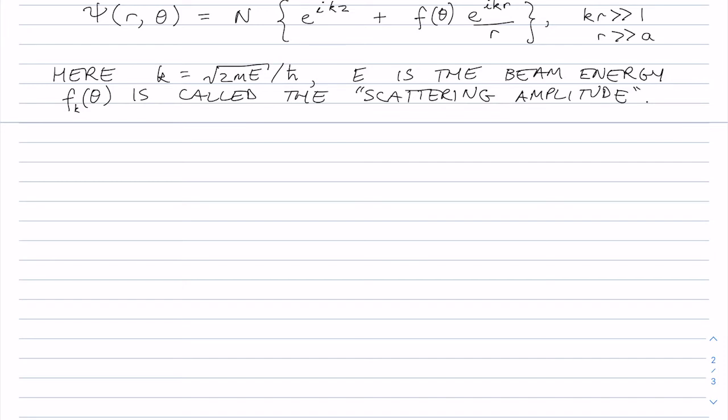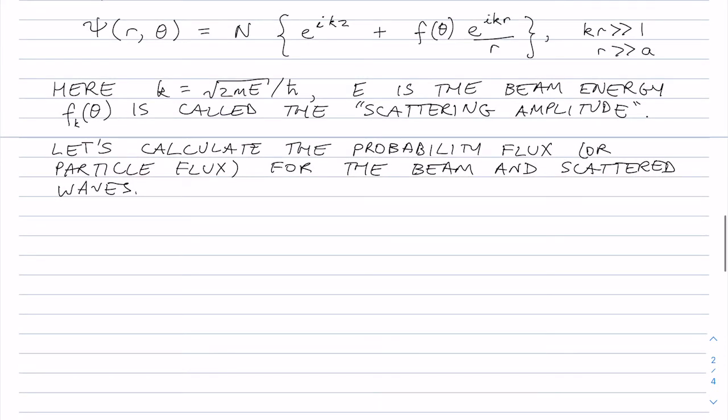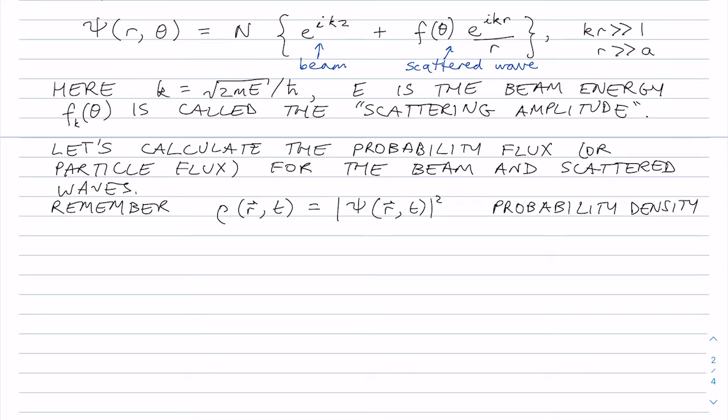So to begin with our treatment of this, let's consider the probability flux or the particle flux for the beam and the scattered waves. So remember, this is the beam, and this is the part that gets scattered. So probability flux and probability density. Let's just remind ourselves what it is. It's the probability density rho. And we have a flux j.